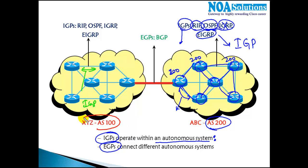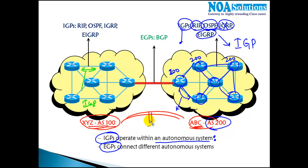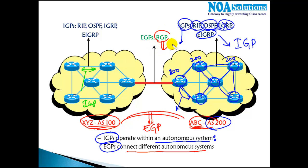If you want to communicate within the same organization or within the same autonomous system number, you use IGP protocols. But if you want to communicate between two different AS numbers — say organization ABC and organization XYZ — you need to use an exterior gateway protocol. There is only one protocol running on the internet for this purpose: BGP, which connects all the different autonomous system numbers.